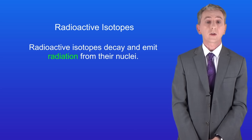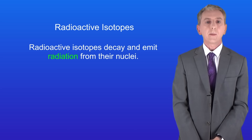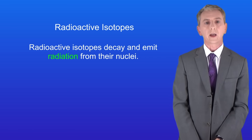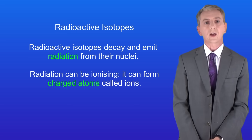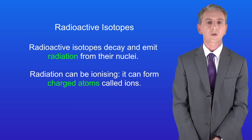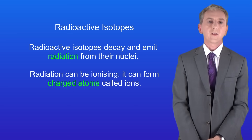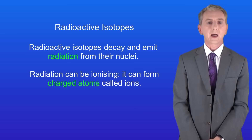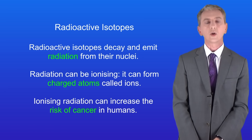Over the last few videos we've looked at radioactive isotopes. Remember that these decay and they emit radiation from their nuclei. We saw that radiation can be ionizing — in other words it can form charged atoms called ions. Now there's a very big risk linked to ionizing radiation and that is that it can increase the risk of cancer in humans.